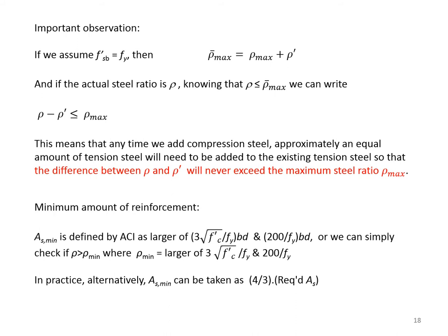Minimum amount of reinforcement: this is usually not pertinent to doubly reinforced sections and is not typically governing the design — it is more relevant to singly reinforced sections. Nevertheless, it is good practice to check the steel amount against the minimum. The ACI recommended minimum is 3√(f'_c)/f_y × bd and 200/f_y × bd, whichever is larger. Alternatively in practice, A_s minimum can be taken as four-thirds of the required A_s.